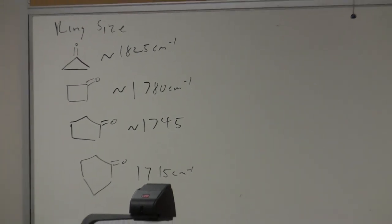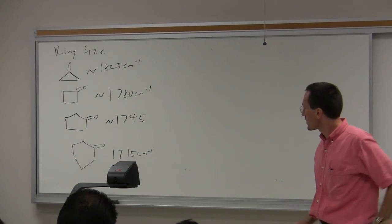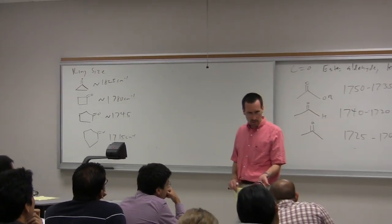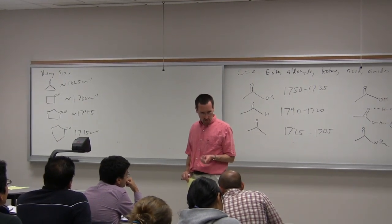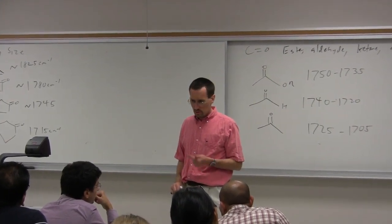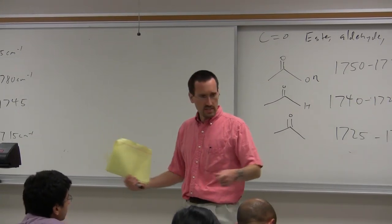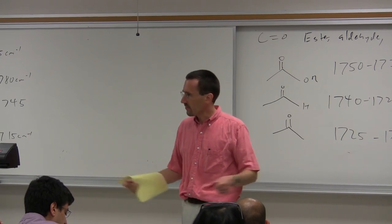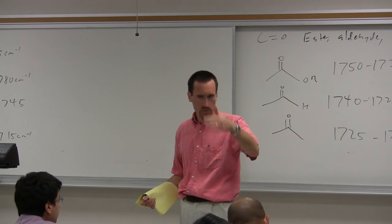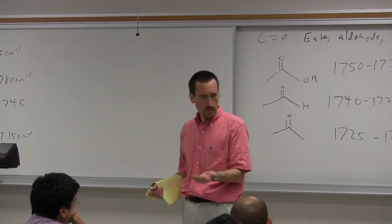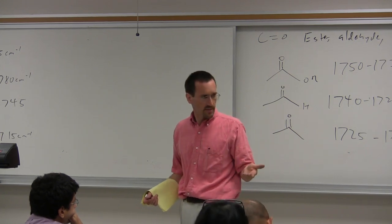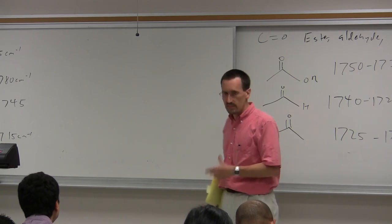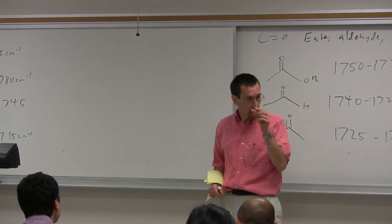What does a higher frequency mean? It stretches faster, which means the bond is stronger. A spring with a very stiff spring vibrates quickly; a very slack spring vibrates slower. We already saw that trend — the CO single bond stretches at about 1,100, the CO double bond at about 1,700. It's the root of K over μ term: root of force constant over reduced mass. So going from 1,715 to 1,825 means a stiffer spring, meaning the carbonyl bond is stronger.